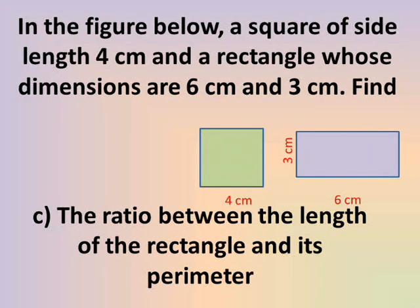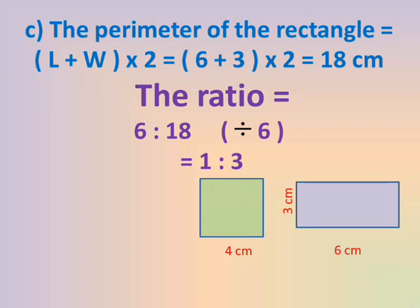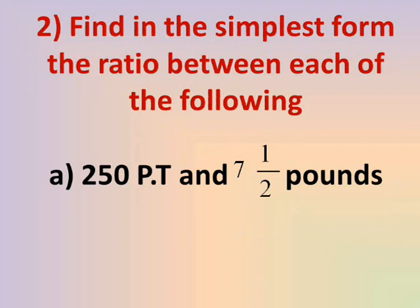Number C: The ratio between the length of the rectangle and its perimeter. The length of the rectangle is 6 cm and the perimeter we already found is 18 cm. So the ratio is 6 to 18. Both 6 and 18 are divisible by 6, so dividing both terms by 6 gives 1 to 3.